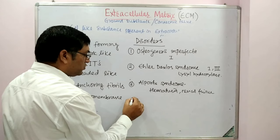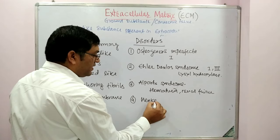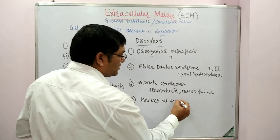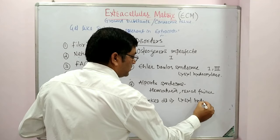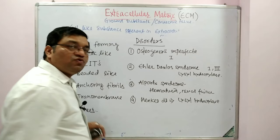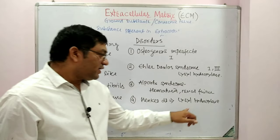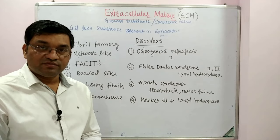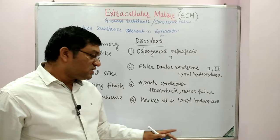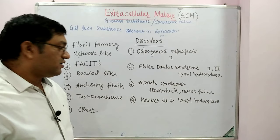The fourth disorder is Menkes disease. It is due to deficiency of lysyl hydroxylase, caused by defective copper absorption. Due to deficiency of lysyl hydroxylase, it results in kinky hair, skeletal deformities, and neurodegeneration in Menkes disease.